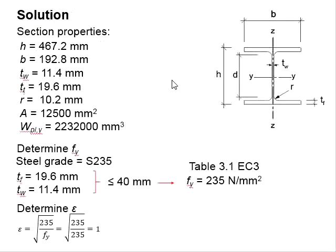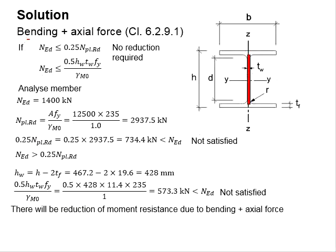With that, we are to check the limits if the axial force exceeded 25% or 50% of the capacity of the cross-section or the web. The axial force is 1400 kN. The axial resistance is given by this equation, which equals 2937.5 kN. 25% of it will equal 734.4 kN.